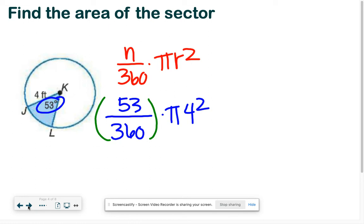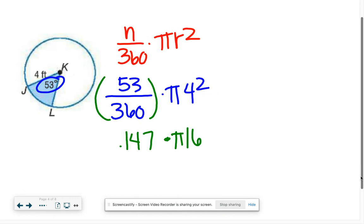I'm going to make this portion of our circle a decimal. So 53 divided by 360 is about 0.147, times pi, 4 squared is 16. Type that into your calculator and you should get approximately 7.4 feet squared. Remember, it is squared because that's area.